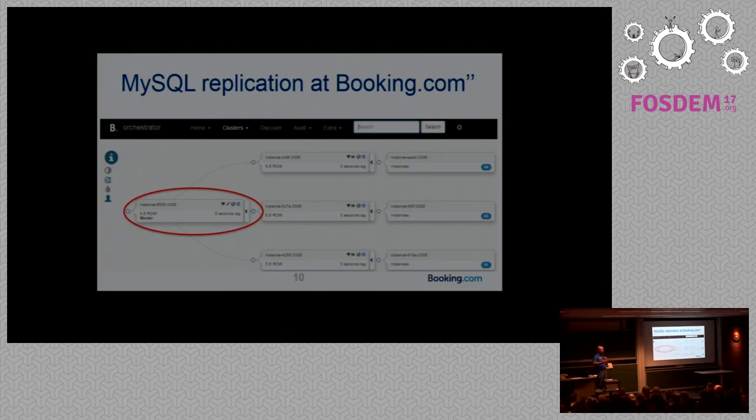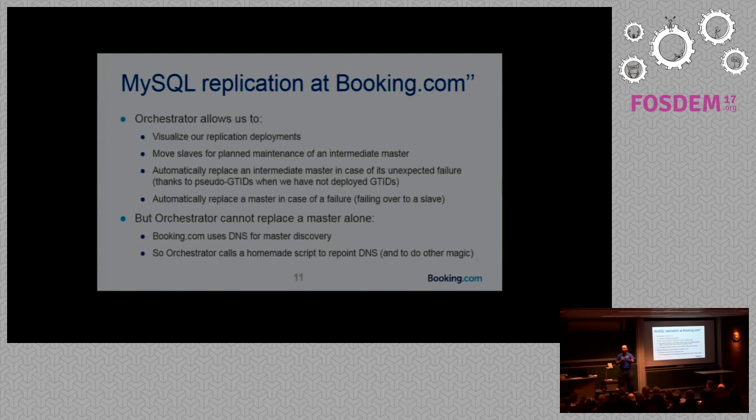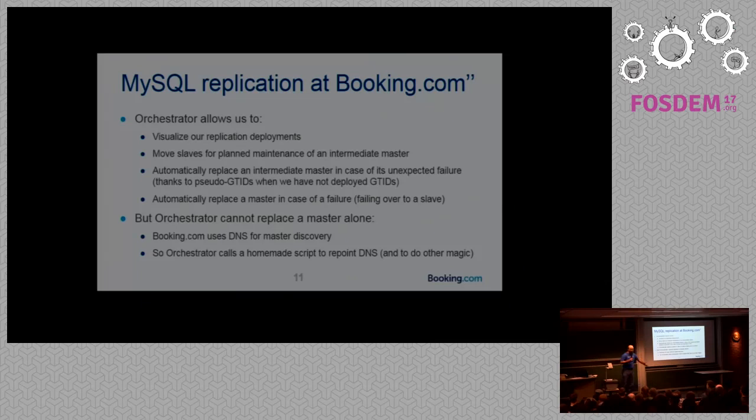Which is quite interesting because when you deploy that as a DBA, you're not paged at 2 in the morning to fix things. Things get fixed by themselves, and that's good, right? It's automation. But orchestrator cannot do that by itself. Orchestrator is good at repointing slaves, at moving, understanding MySQL, but orchestrator doesn't understand the way we use MySQL at Booking. At Booking, we use DNS for knowing to which server we need to write as the master.